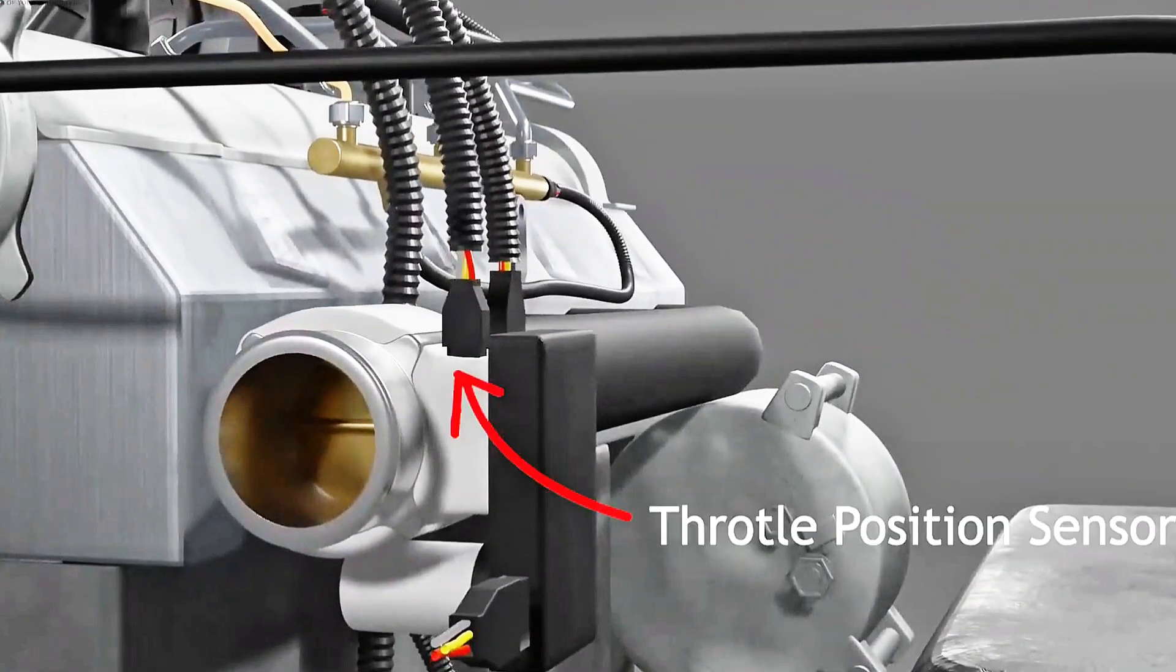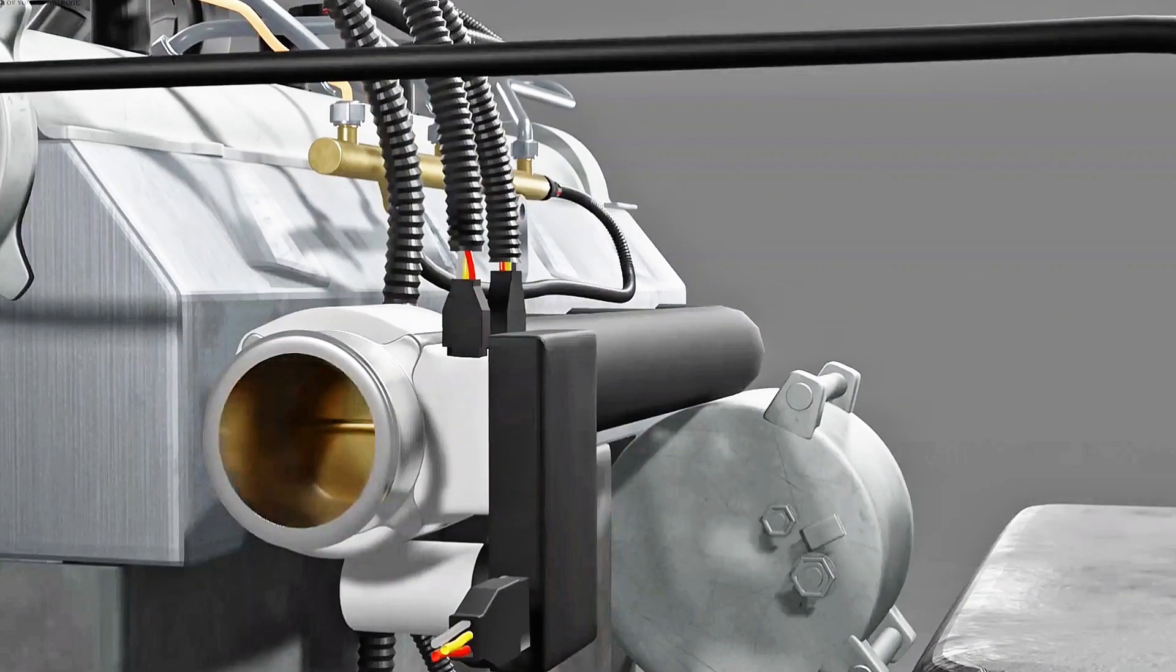Then there is the throttle position sensor. Its function is to measure how wide the gas valve is open.